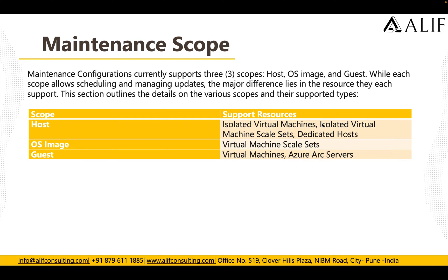There are three types of scope with maintenance configuration. The first scope is 'Host,' which covers isolated virtual machines, isolated virtual machine scale sets, and dedicated hosts. The second scope is 'OS Image,' where VM scale sets are the supported resources. The third scope is 'Guest,' which covers virtual machines and Azure Arc servers.